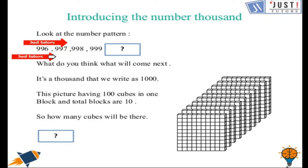Look at the number pattern over here. We have 996, 997, 998 and then 999. What number comes after 999? As after 99, we have 100. After 999, we have 1000.